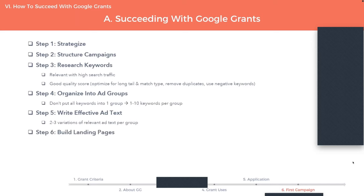Step six is to either pick an existing one or build a landing page. A landing page is a page designed to engage and convert your traffic into whatever action you want them to fulfill. If you are promoting an event, you should not be pointing that person to the homepage — you have to send them to an event page that talks about the event, has the date and cost, and gives them an easy way to register. This is really important in terms of extracting as much value as you can from the grant program. You don't want to waste those dollars — you want to get meaningful action for your nonprofit that grows your nonprofit.